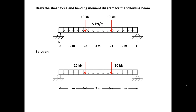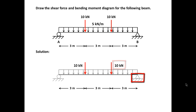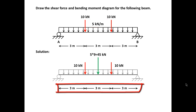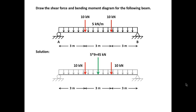The 10 kilonewtons on the left can be carried by the left support and the 10 kilonewtons on the right will be carried by the right support. For the distributed load, we concentrate it by multiplying the magnitude by the length of the beam: 5 multiplied by 9 gives us 45 kilonewtons, and half goes to each support. So AY and BY are each 10 plus 45 over 2, which gives us 32.5 kilonewtons.